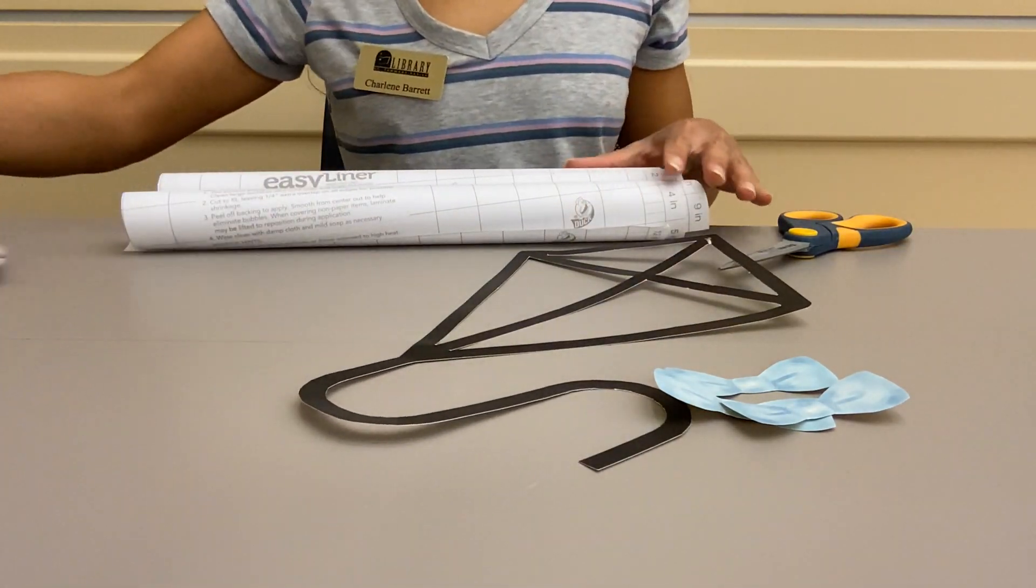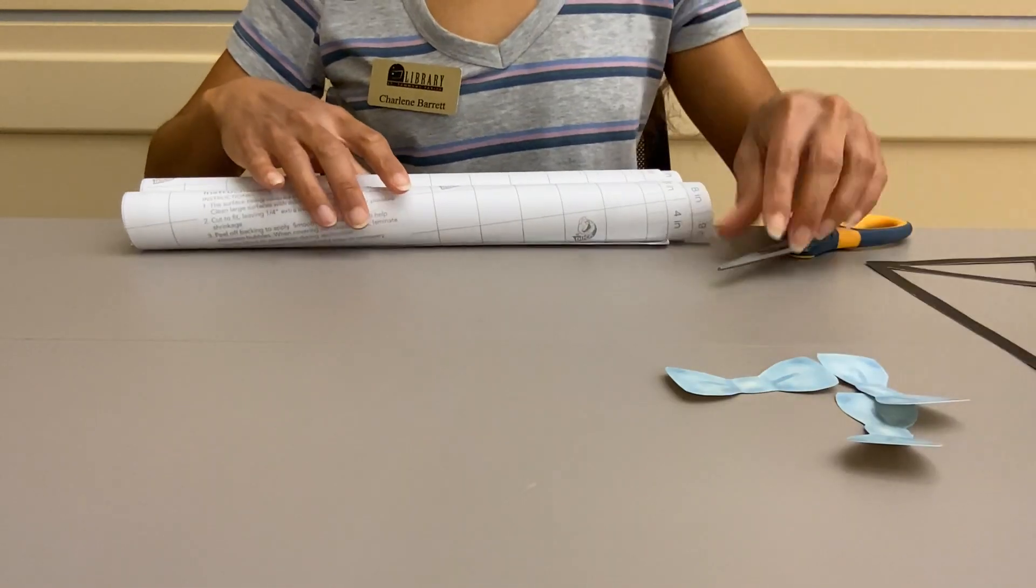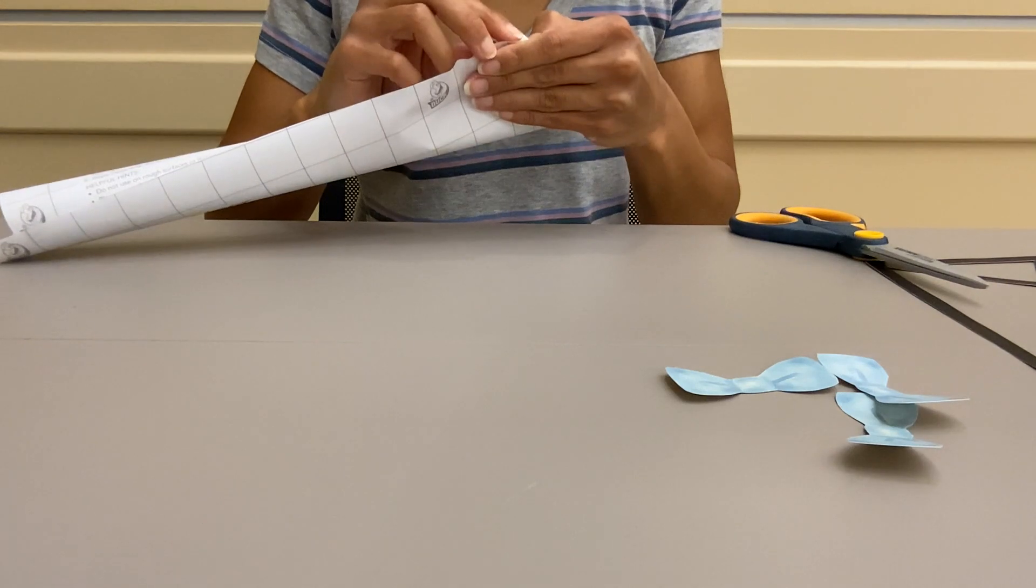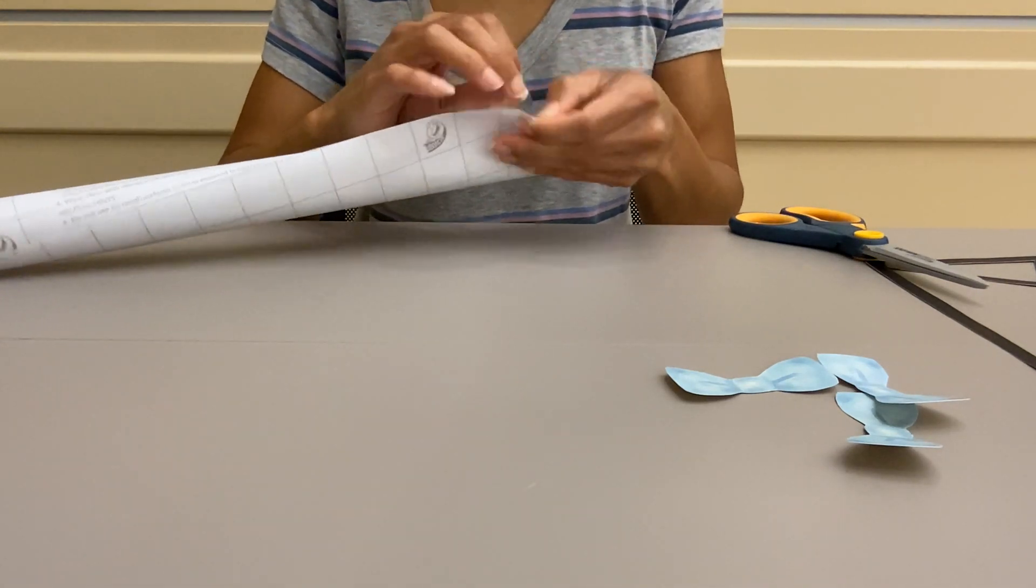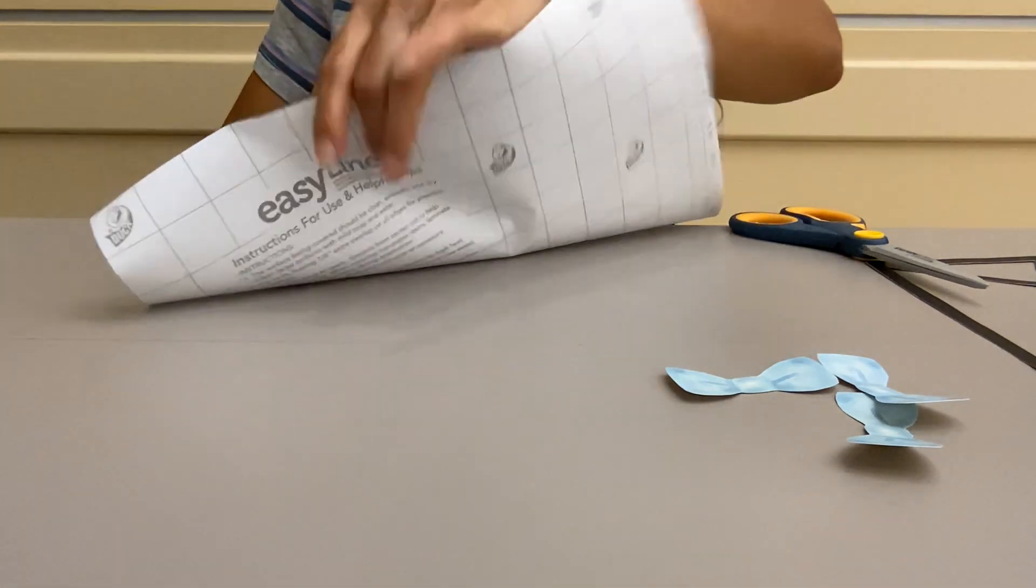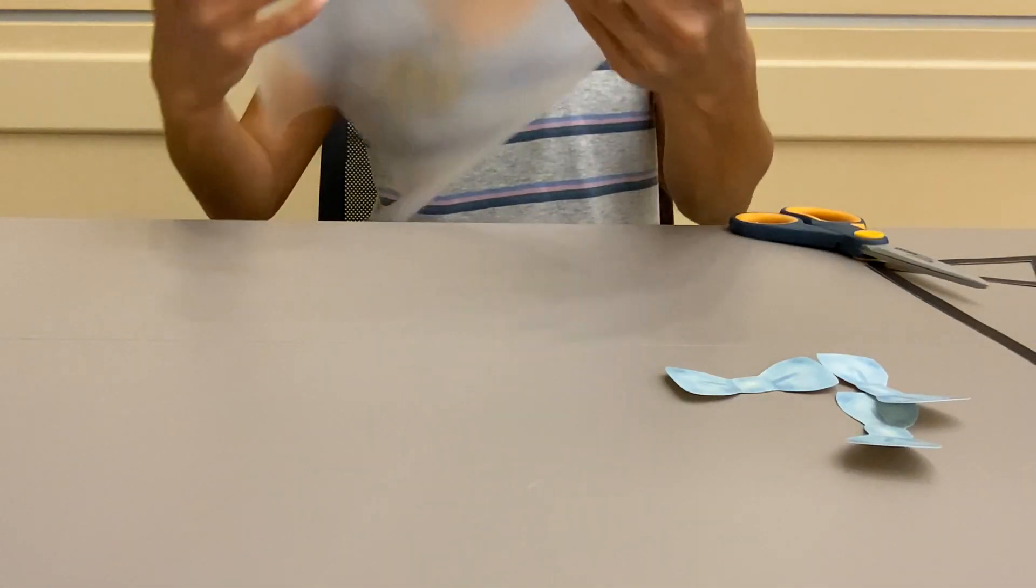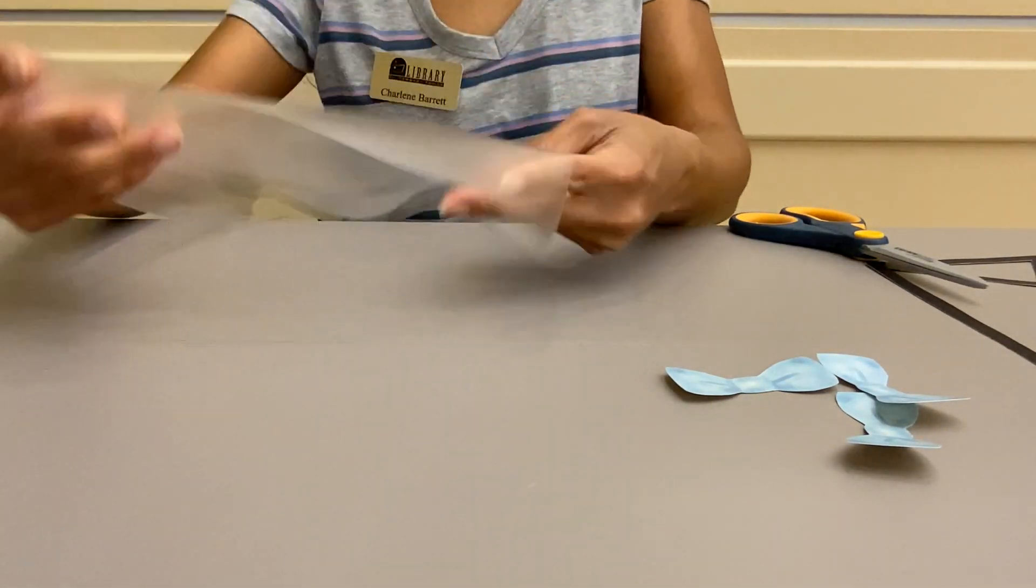So the first thing you're going to do is take your contact paper, I have two sheets, and you are going to unpeel it. Then you're going to lay it flat down, sticky side up.